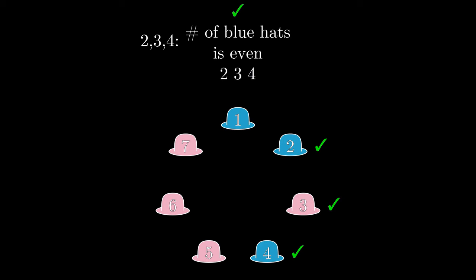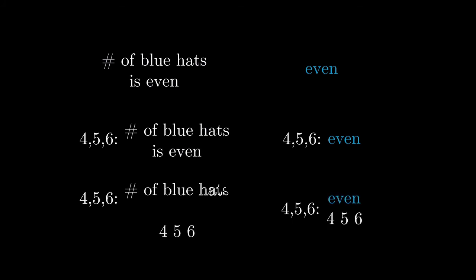We are now ready to see a perfect strategy using these beliefs. Since these beliefs take up a lot of screen space, let's write them like this. A blue even indicates that the belief is the number of blue hats is even. We tell which players share the belief by writing their numbers before the belief, and we tell which hats the belief is about by writing the relevant hat numbers below the belief. We need to be very cautious to ensure that if anybody makes a correct guess, we have to achieve exactly 4 correct guesses.